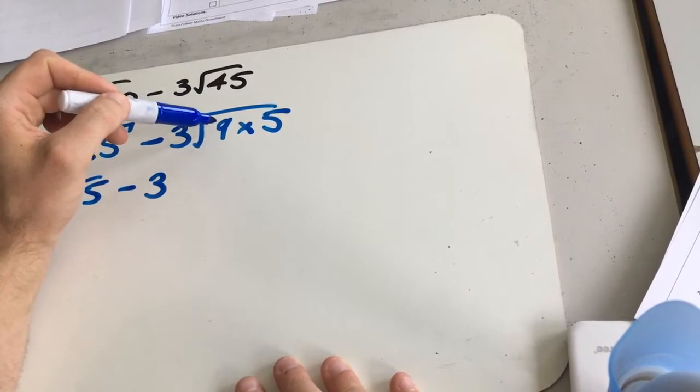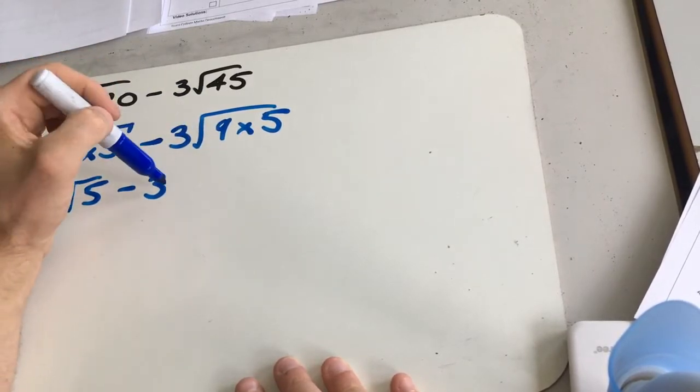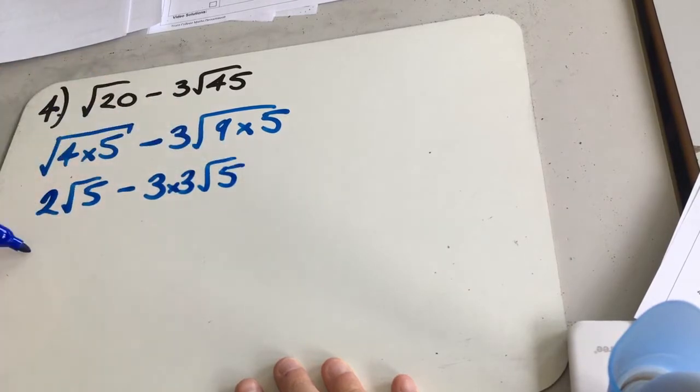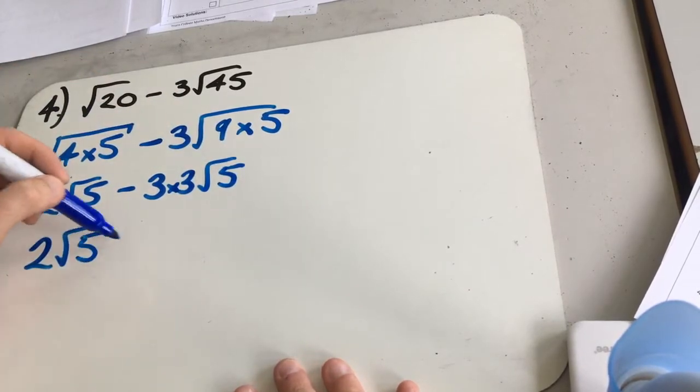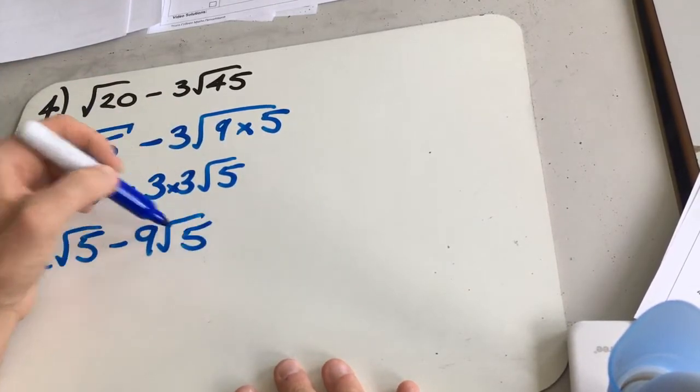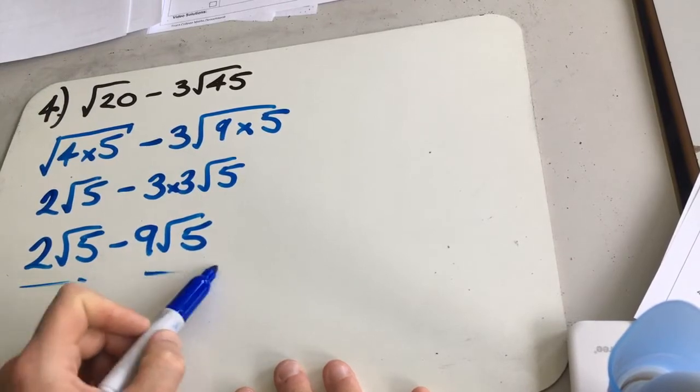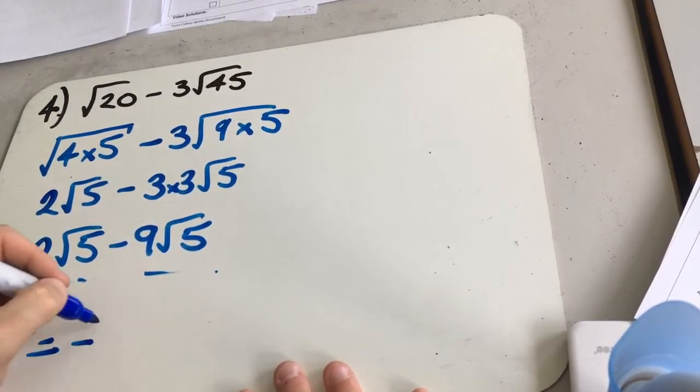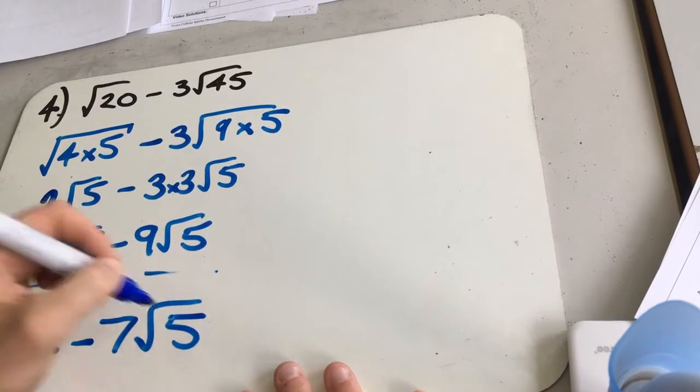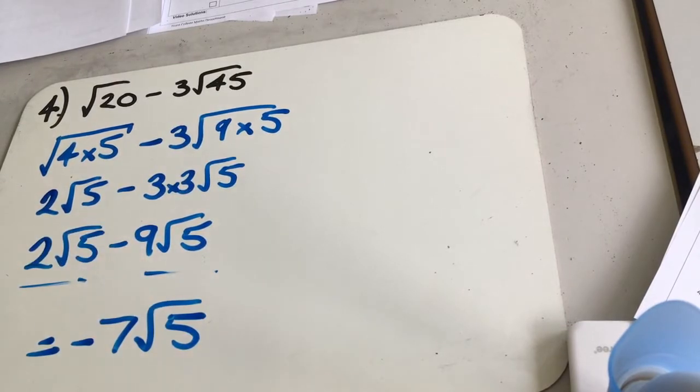So we get 2 root 5 minus 3 lots of, well, root 9 is 3. So we can get 3 times 3, root 5. So in other words, this becomes 2 root 5 minus 9 root 5. 2 lots of something, take 9 lots of something, is going to give us minus 7 root 5.